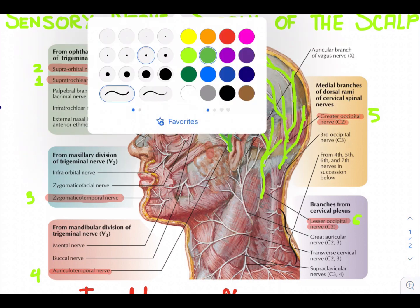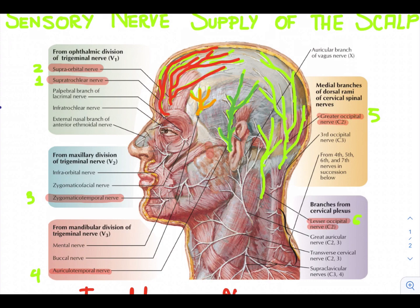The fifth one is the lesser occipital nerve. Let's trace the lesser occipital nerve on this diagram. This is the lesser occipital nerve. It is a branch of the cervical plexus. It supplies the scalp over the lateral part of the occipital region and the skin over the medial surface of the auricle.